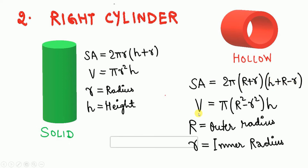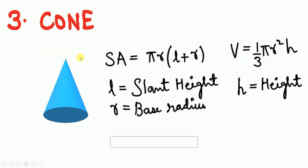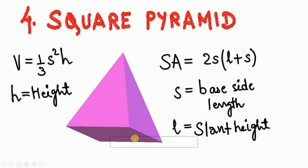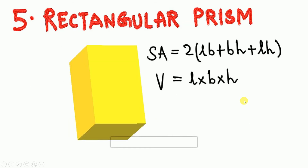Next is the cone. Surface area = πr(l + r), where l is the slant height and r is the base radius. Volume = (1/3)πr²h, where h is the vertical height. Then the square pyramid: volume = (1/3)s²h, where s is the base side length and h is the vertical height from apex to base. Surface area = 2sl + s², where l is the slant height.